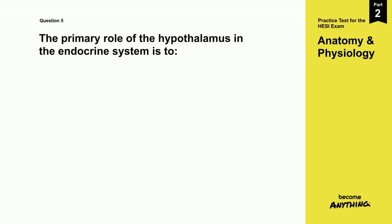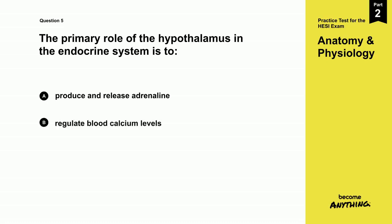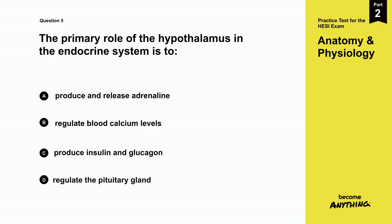Question 5. The primary role of the hypothalamus in the endocrine system is to what? A. Produce and release adrenaline. B. Regulate blood calcium levels. C. Produce insulin and glucagon. D. Regulate the pituitary gland.